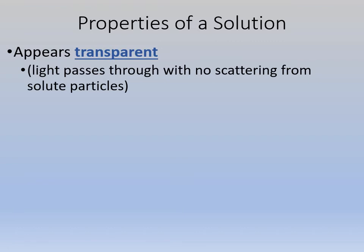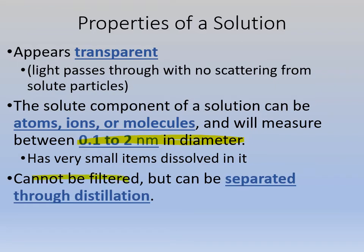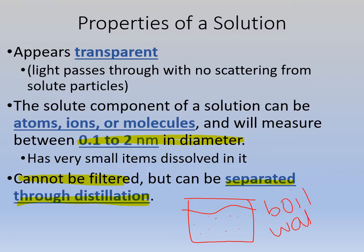Properties of solutions: Solutions are transparent — light passes through them without any scattering. Solutions can have solutes — atoms, ions, molecules — that are relatively small, 0.1 to 2 nanometers in diameter. Very small things are dissolved inside. Solutions cannot be filtered because the pieces are so small, but they can be separated through distillation. Distillation is when you have something with stuff inside of it, boil the water, and then your sugar or whatever is left in the pot.